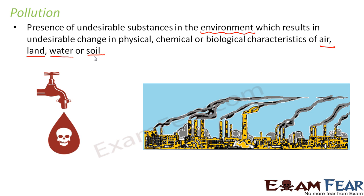When you talk about air pollution, the first thing that will come to your mind is the smoke coming out of industries or factories — you can actually feel that they are polluted. The black smoke which comes out contains a lot of dust, dirt, and undesirable substances. That's how air pollution is caused. However, emissions from factories or industries are not the only cause of air pollution; there are plenty of other causes which we will discuss.